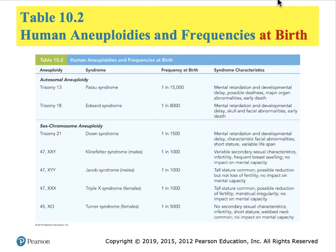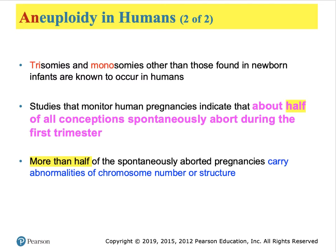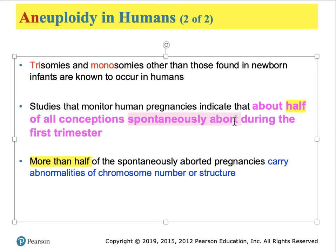Table 10.2 shows the frequencies at birth of certain human aneuploidies. Importantly, larger chromosomes are very infrequent, whereas sex chromosomes are relatively more frequent. An amazing fact: if we take all human conceptions and measure how many lead to birth, only 49% result in a live birth. That means 51%—the majority—result in some type of spontaneous abortion or miscarriage, with approximately half of those due to chromosomal abnormalities.